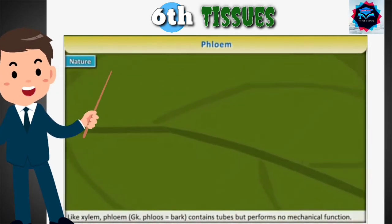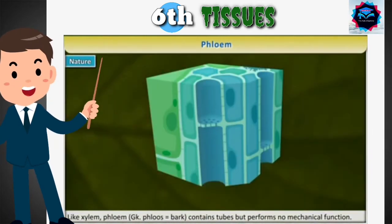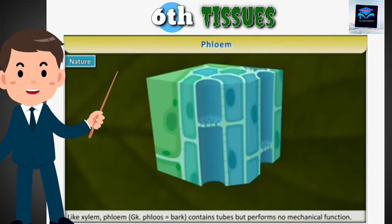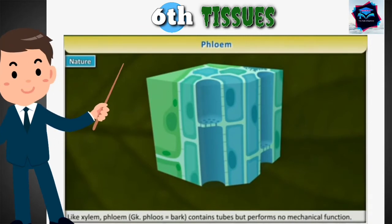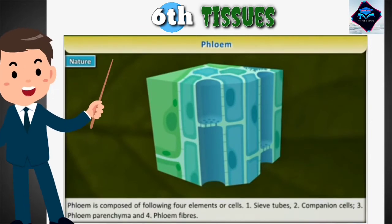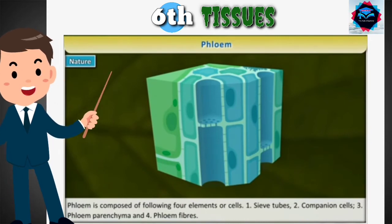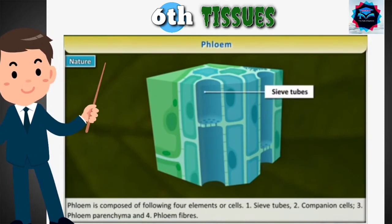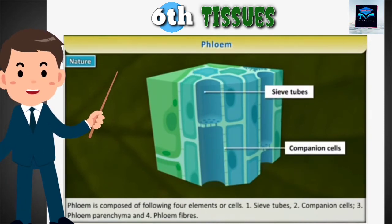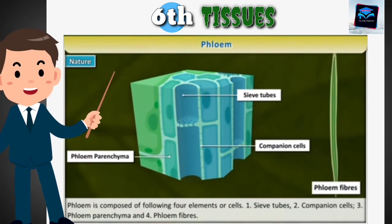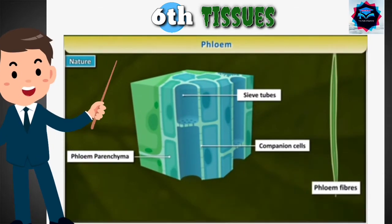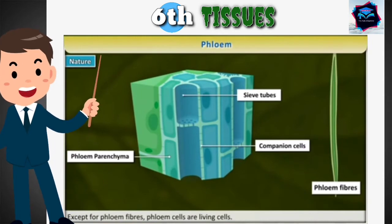Phloem — from the Greek word 'phloos' meaning bark — contains tubes but performs no mechanical function. Phloem is composed of four elements or cells: sieve tubes, companion cells, phloem parenchyma, and phloem fibers. Except for phloem fibers, phloem cells are living cells.